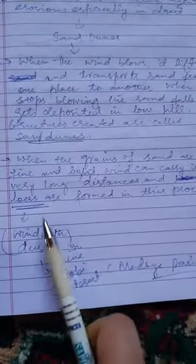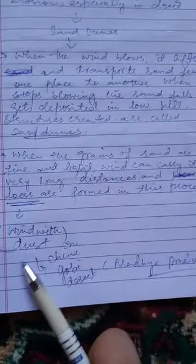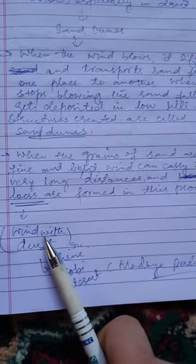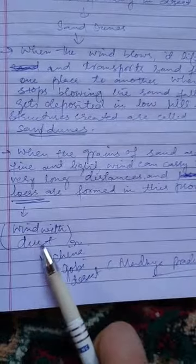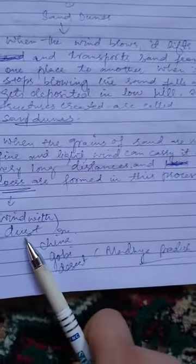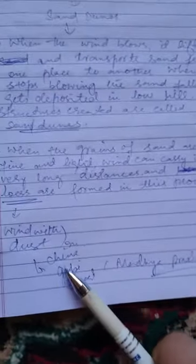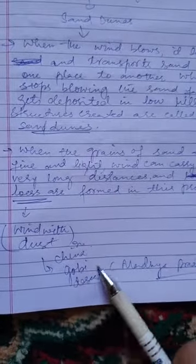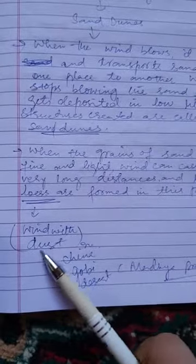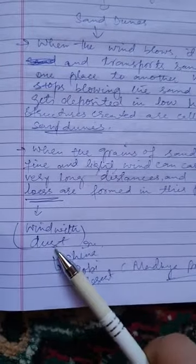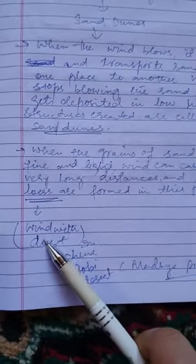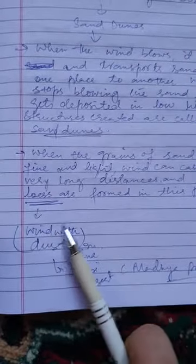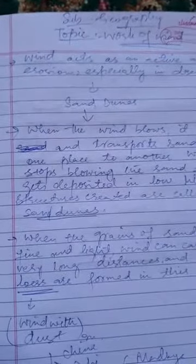Loess is wind with dust. What is dust material? Dust particles. Like in China — China has a desert, it is the Gobi Desert. Loess is deposited dust material. This is found in India and Madhya Pradesh as well.